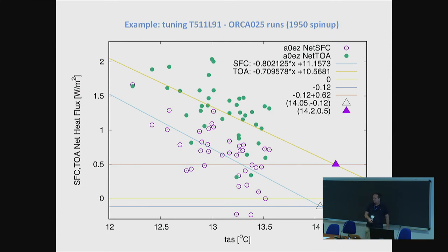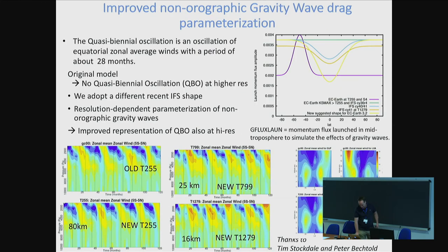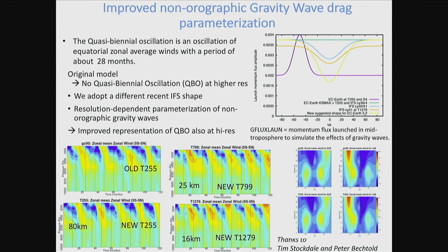Then you can decide if you like that or not. The two sets of points represent doing this either at TOA or at surface. I also mentioned processes - we also worked on improving some dynamical processes in the model, but I think I'll skip this.